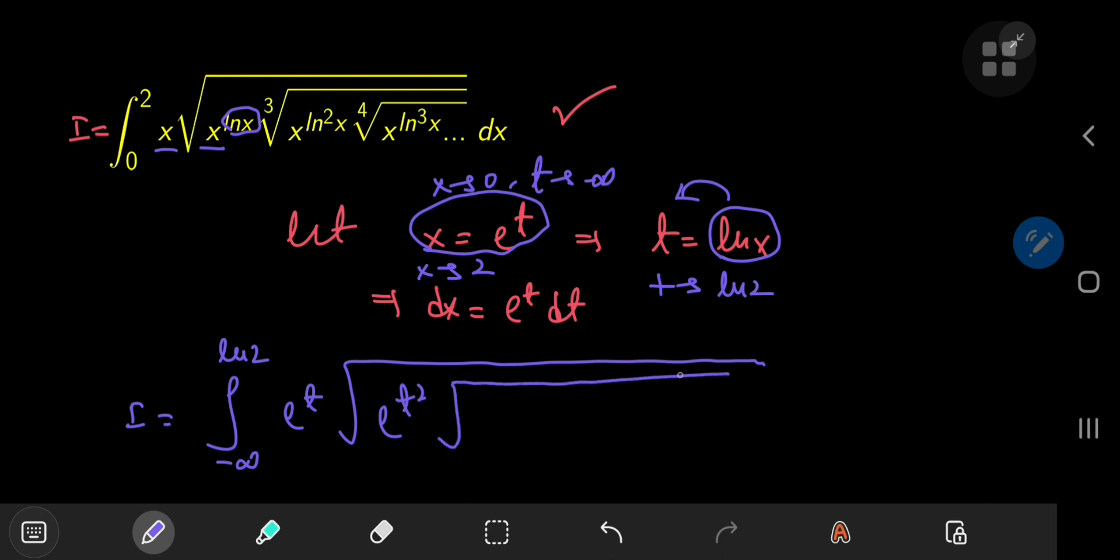And this is times a cube root of e to the t. That's this x term here. And the natural log of x is t. So this is t squared.